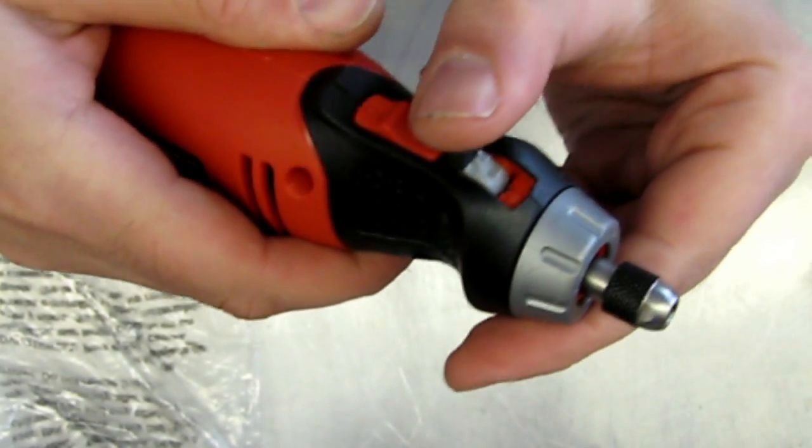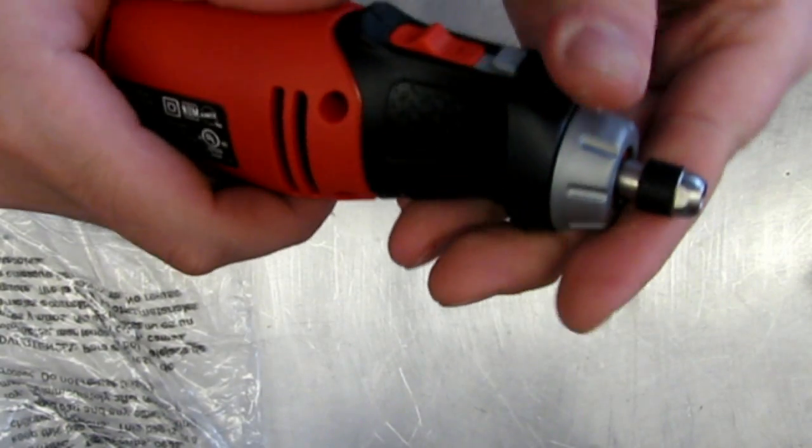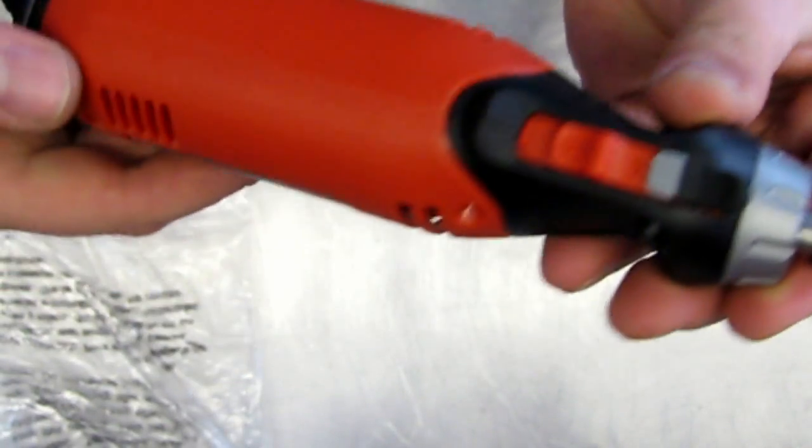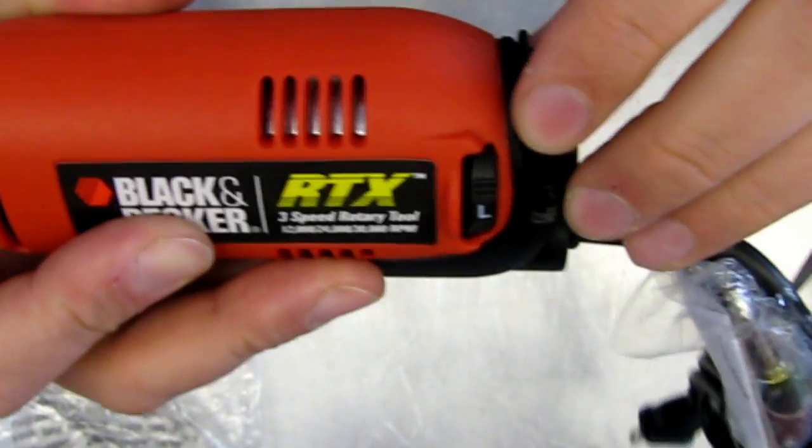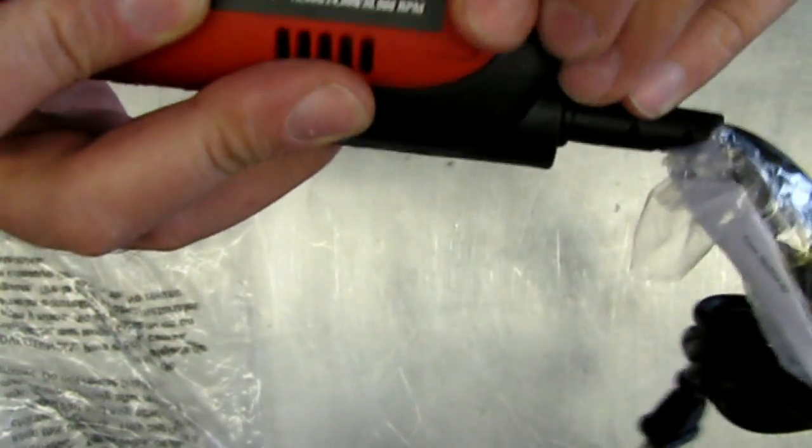This is called the flip lock. It just holds the shaft in place. That's your on and off switch. And your speed control is right here. It's got three speeds.